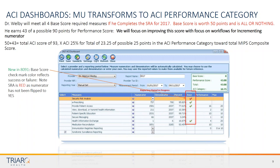If you don't meet the base score, those 50 automatic points are all or nothing — you don't get the 50 points, and you don't get your performance points either. The dashboard shows what your performance points will be if you meet your base score. Adding our 50 to 43 gets us a 93, giving us 23.25 out of a possible 25 in this performance category. There are 80 points available in the performance category, but you only need 50 — lots of room for extra credit.